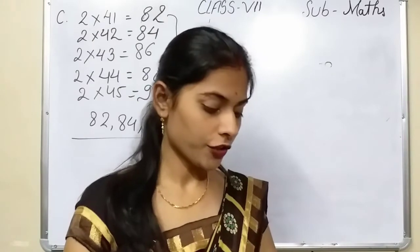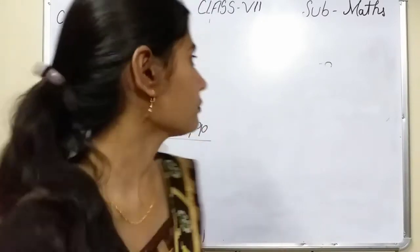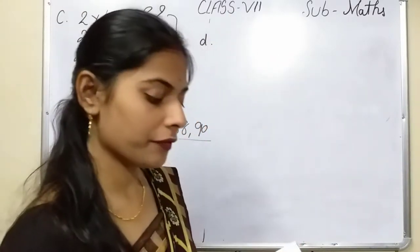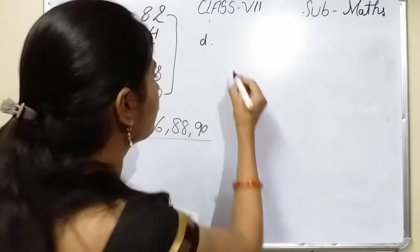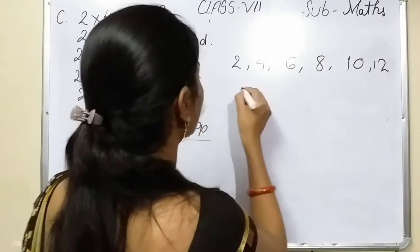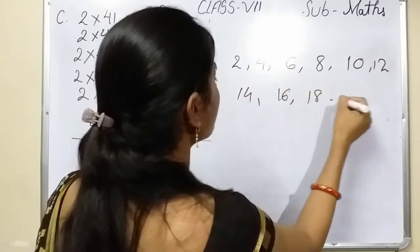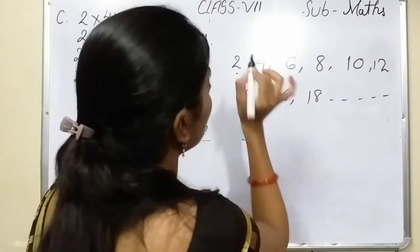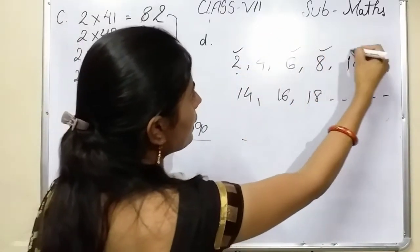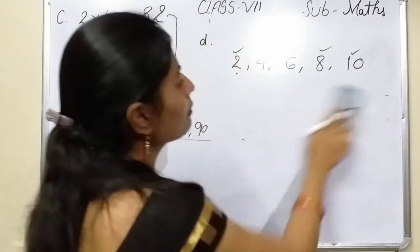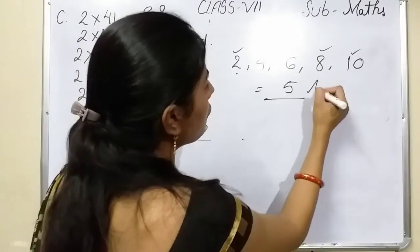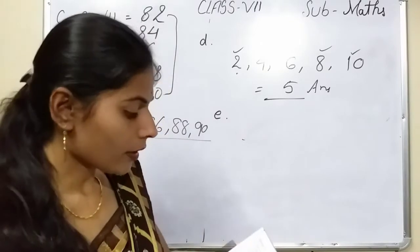Question: how many even numbers are there between 1 and 10? Even numbers are 2, 4, 6, 8, 10, 12, 14, 16, 18, and so on up to infinite. But here we need between 1 and 10, so the even numbers are 2, 4, 6, 8, and 10 — 10 is also included. How many numbers are there? 1, 2, 3, 4, 5 — there are 5 even numbers between 1 and 10.